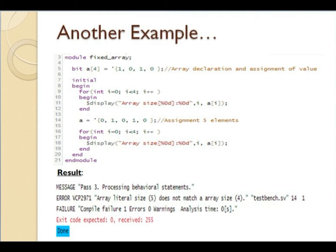In this slide we will be going through another simple array example. A variable array of type bit and size 4 is declared in the module, and then explicitly 4 elements are assigned into the array. You can observe the display statement which prints the 4 stored elements. Additionally, in the initial block we will try to assign 5 elements into the array.